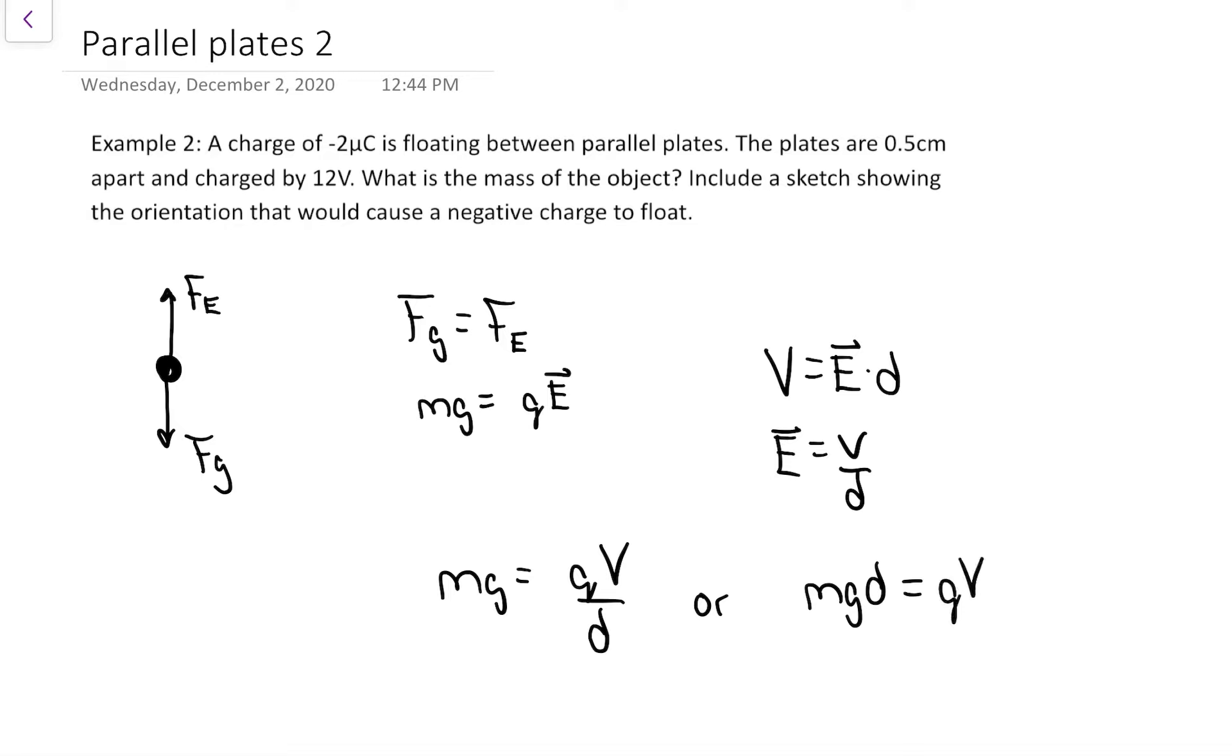I like to have a checkpoint equation: mgd equals qV, V for volts. That's our common floating charge situation. At this point I know the q (negative 2), the d value, and the voltage, so there's enough data to solve for the mass.